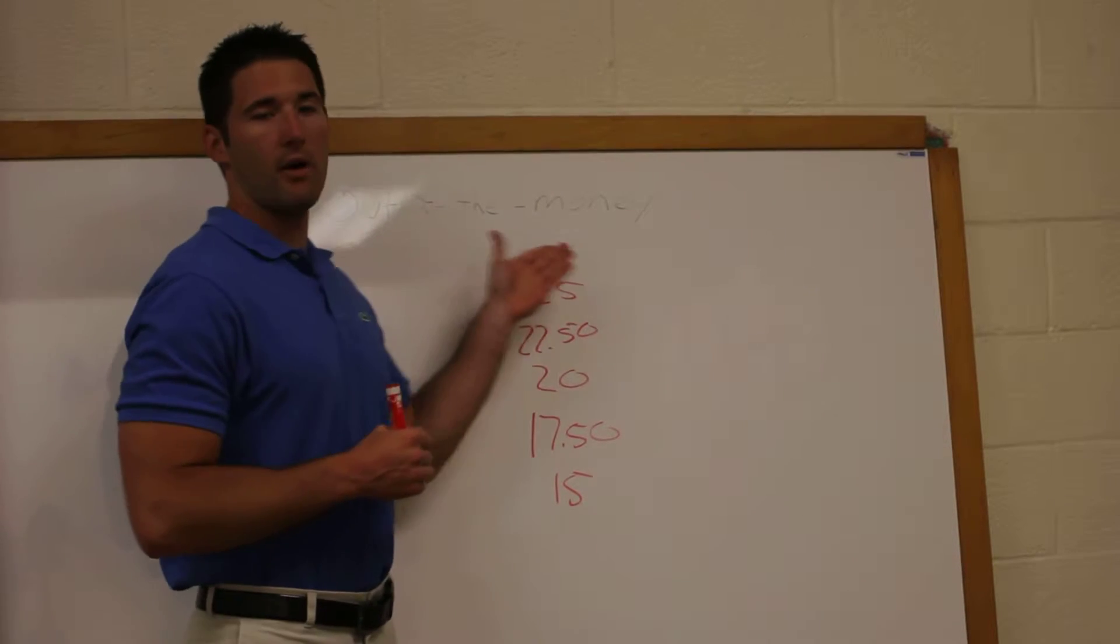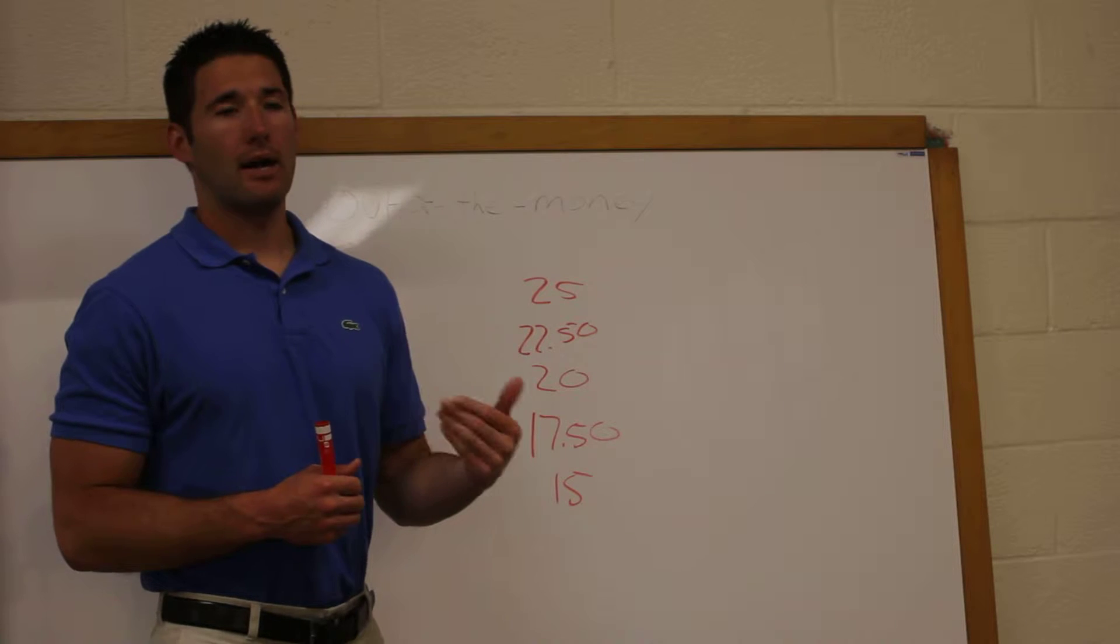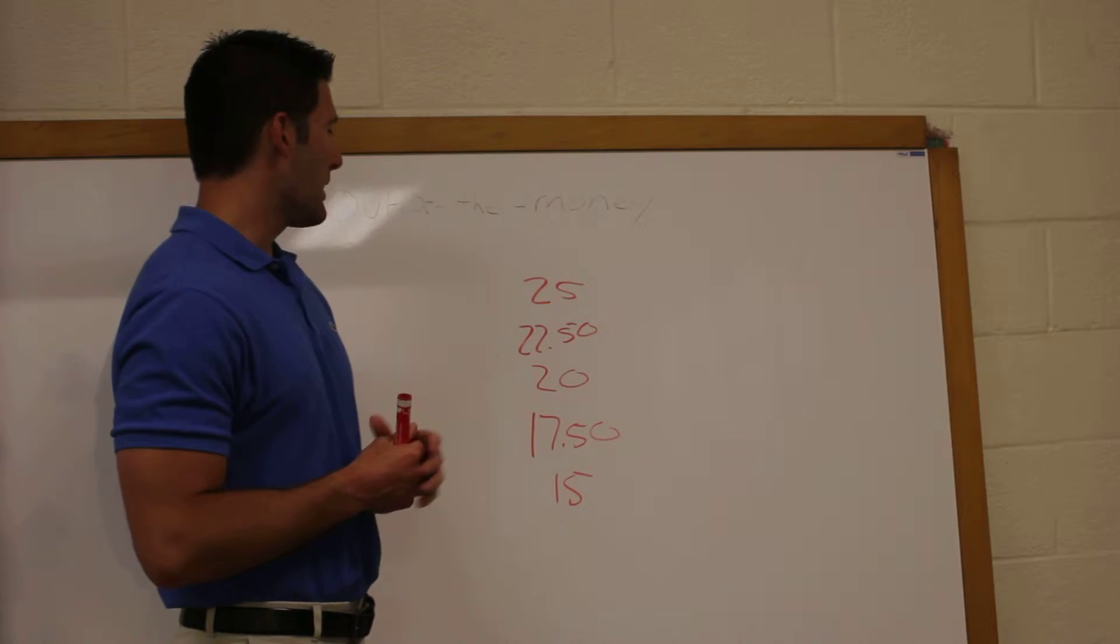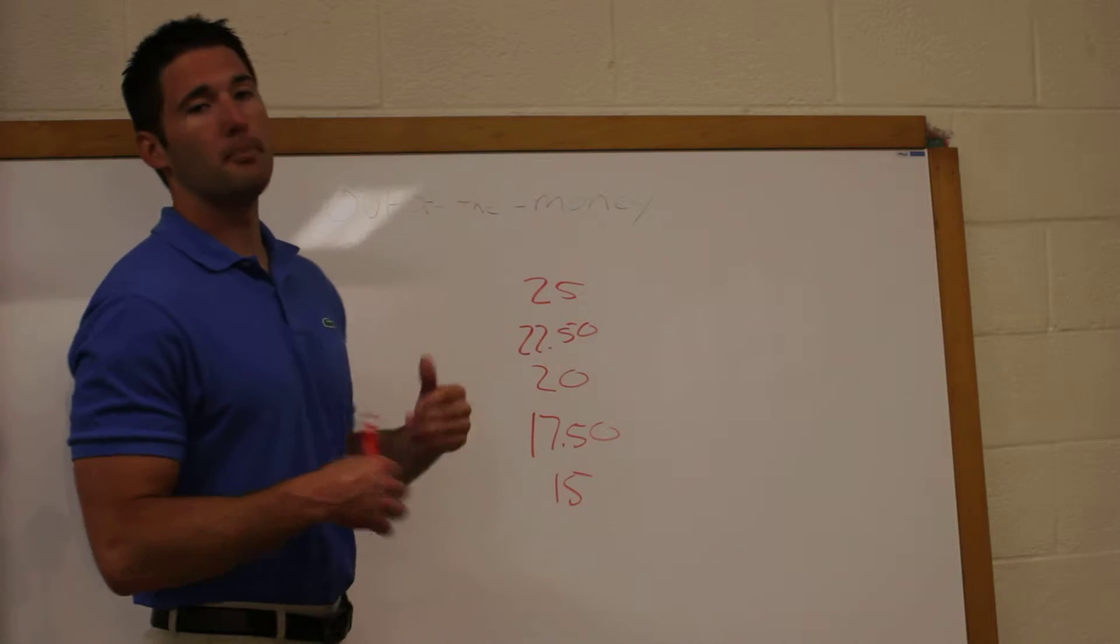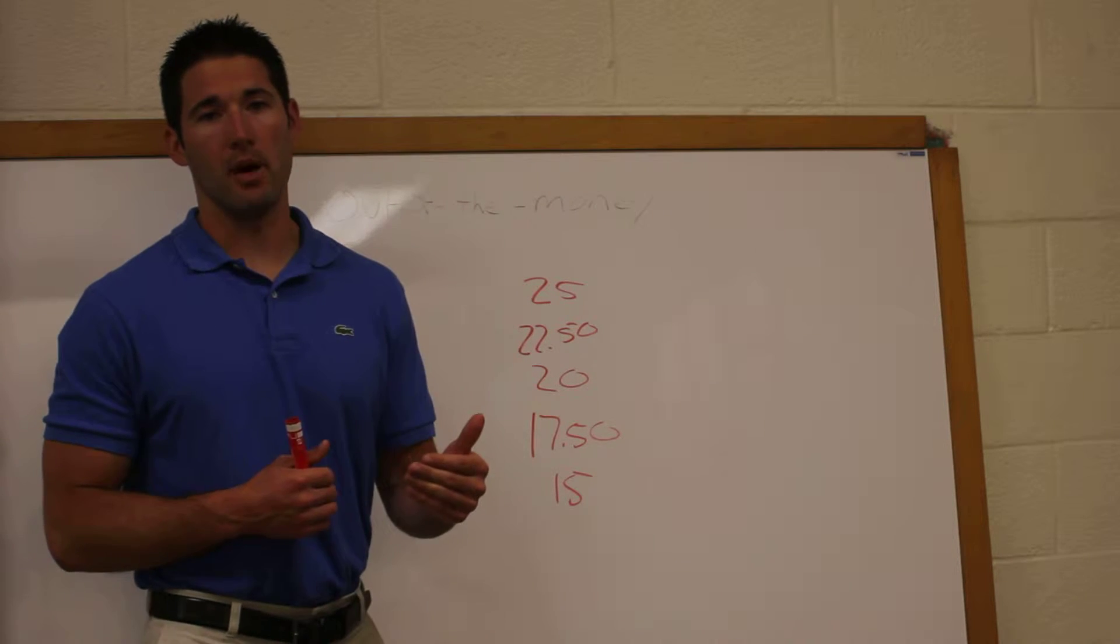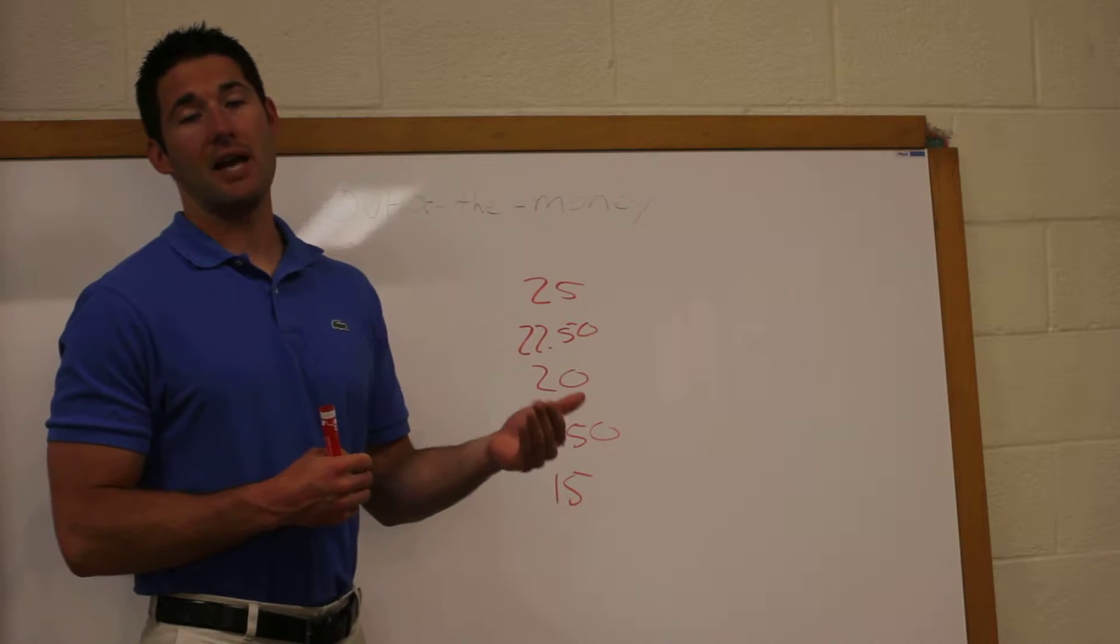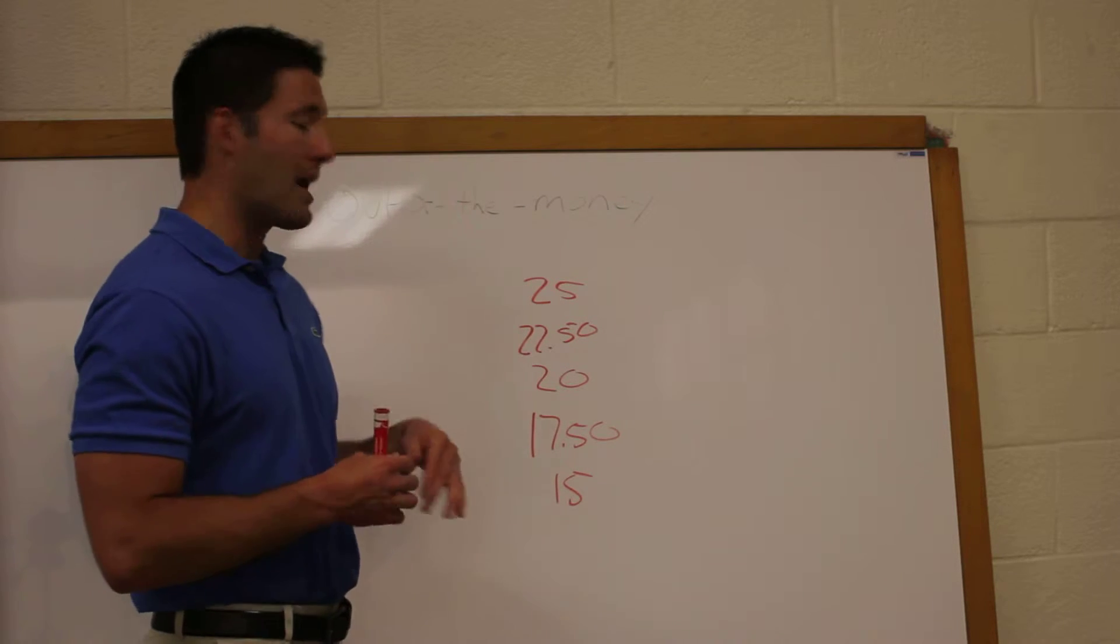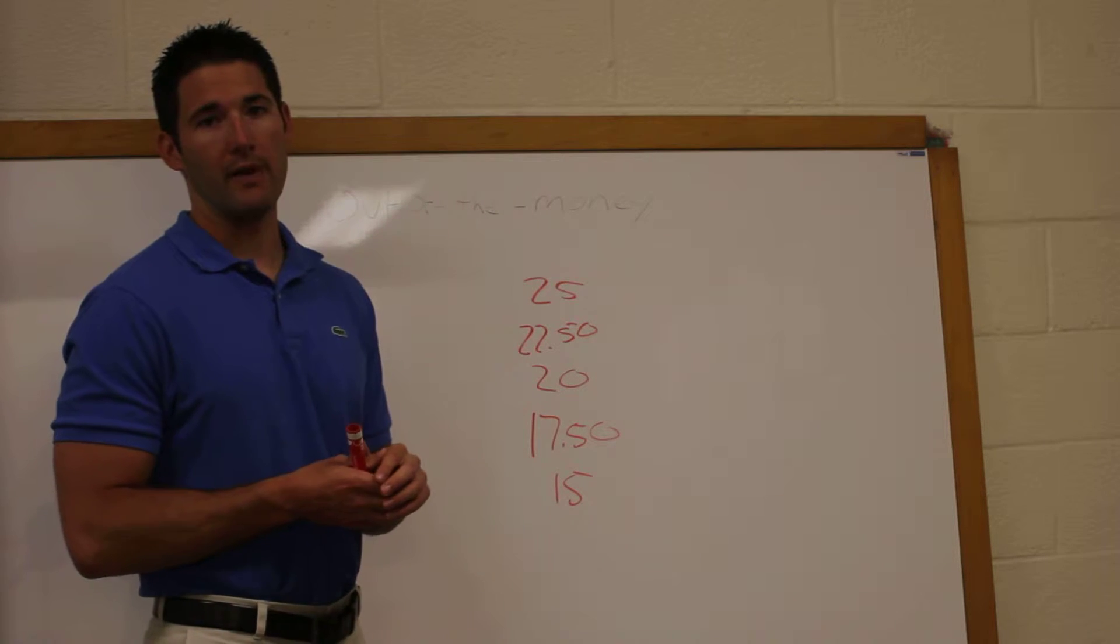So what is an out of the money option? An out of the money call option would be any option whose strike price is above the stock's current market value. For a put option, it would be the exact opposite. It would be any option whose strike price is below the stock's current market value.